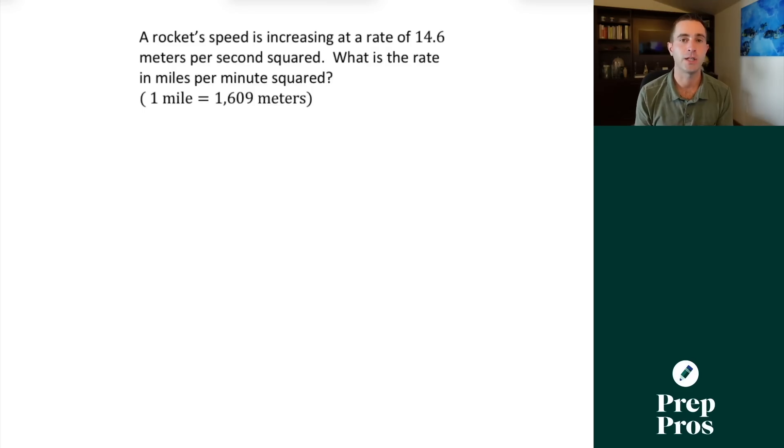Now the next concept you're going to see on your digital SAT are what I like to call advanced unit conversion questions. So these are going to involve squared or cubed units. So we need to square or cube our conversion factor. And this is the place that most students struggle. A rocket speed is increasing at a rate of 14.6 meters per second squared. What is the rate in miles per minute squared?